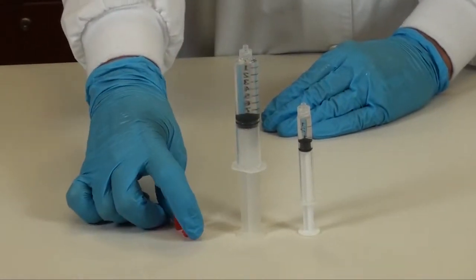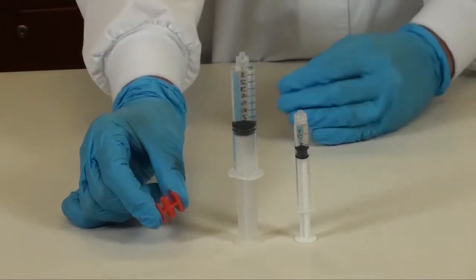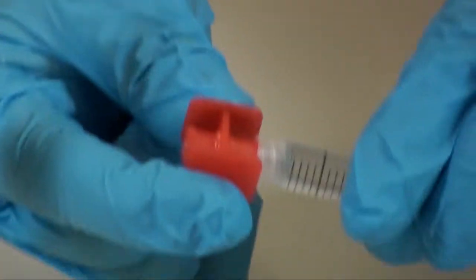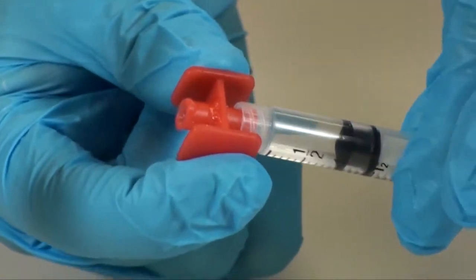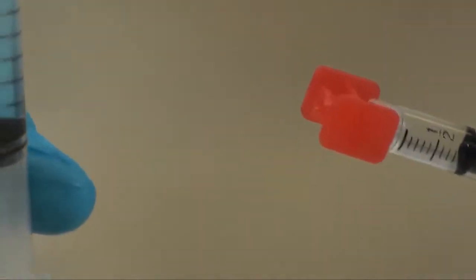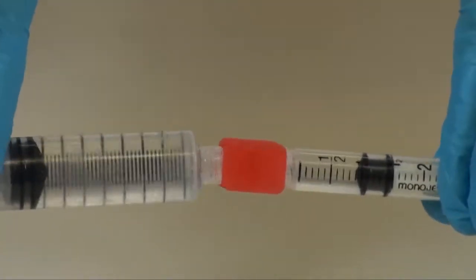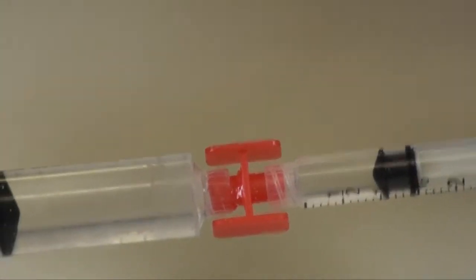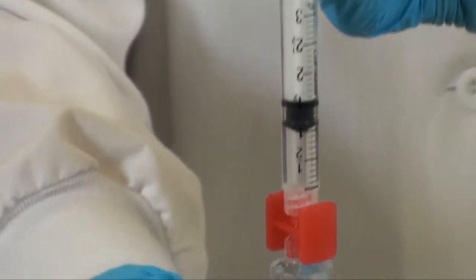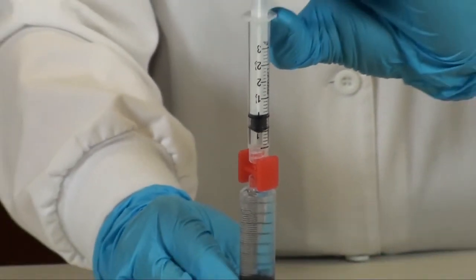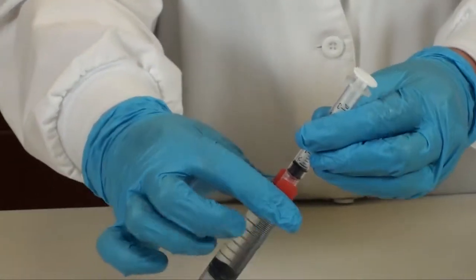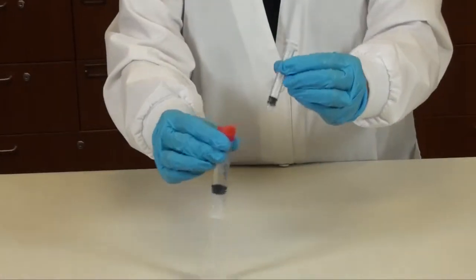So you do this by using a syringe connector. We will attach it to the 3ml syringe and then attach our 12ml and luer lock that on. And then add the solution into the 12ml syringe. Go ahead and twist off the 3ml syringe.